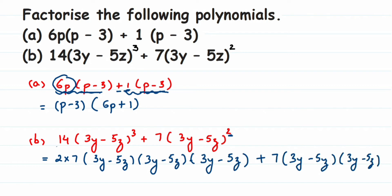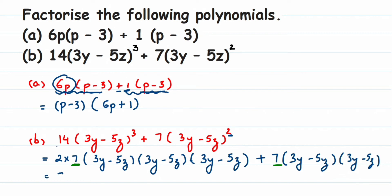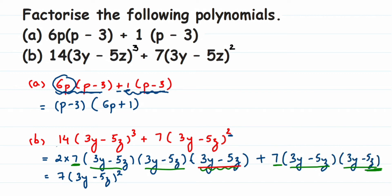Now we pull out what is common. We have a 7 in both terms, so I pull out 7. Next, looking at (3y - 5z): the first term has it three times and the second term has it two times. I can only take (3y - 5z) squared as common, because I can't take more than what's available on both sides. So the common factor is 7 into (3y - 5z) squared.